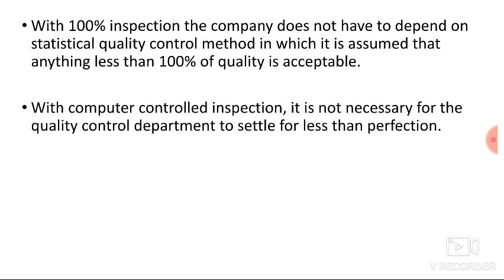With 100% inspection, the company does not have to depend on statistical quality control methods, which assume that anything less than 100% quality is acceptable. Basically, companies following statistical quality control perform inspection and accept components that fall under the bell curve. But with computer-controlled inspection, it is not necessary for the quality control department to settle for less than perfection — we can inspect each and every product.